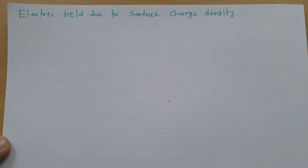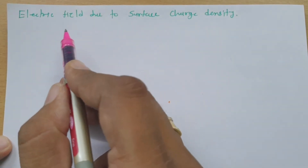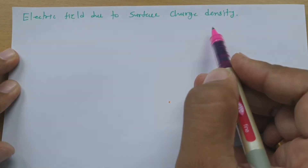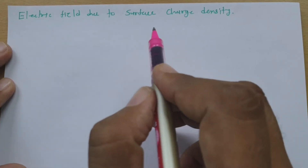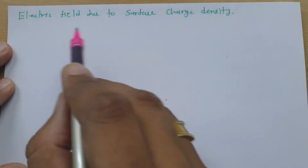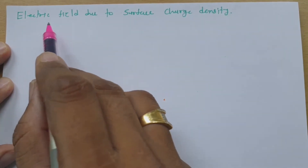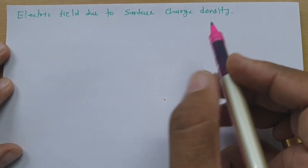Welcome to the Electromagnetics Playlist. Professor Itesh Dolakya is going to explain the electric field due to surface charge density. We are going to derive the electric field calculation for surface charge density.